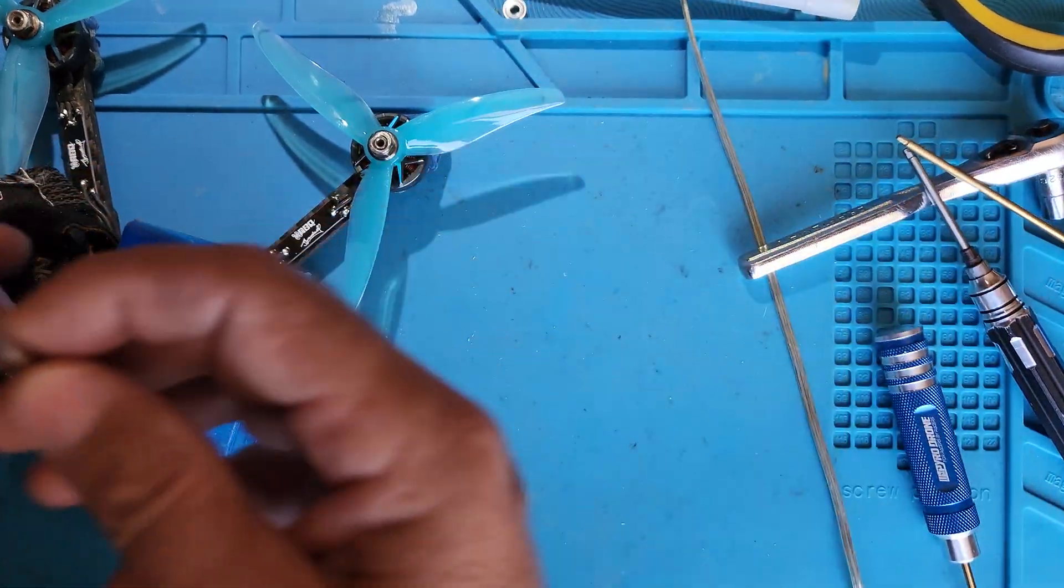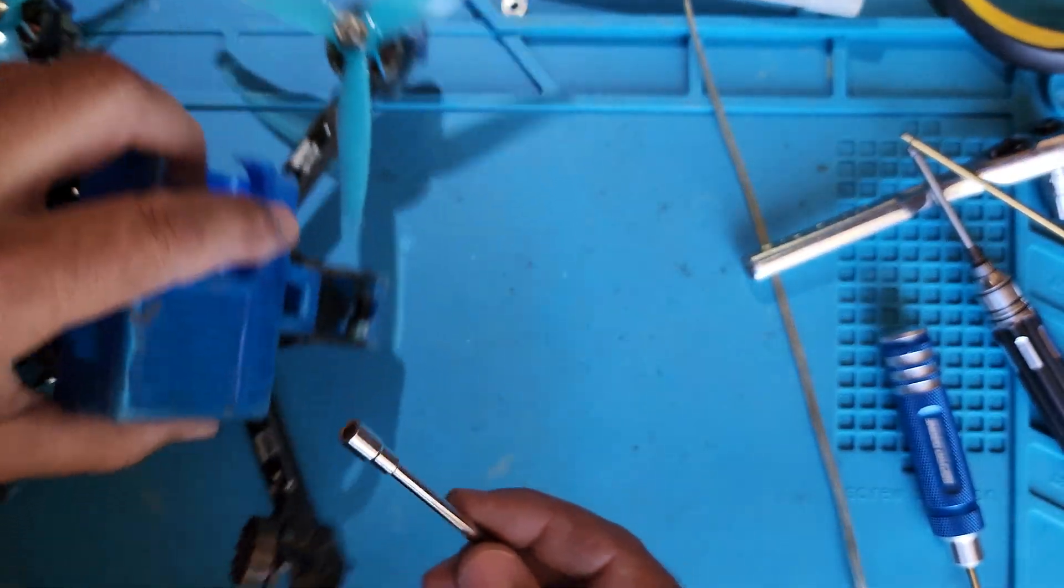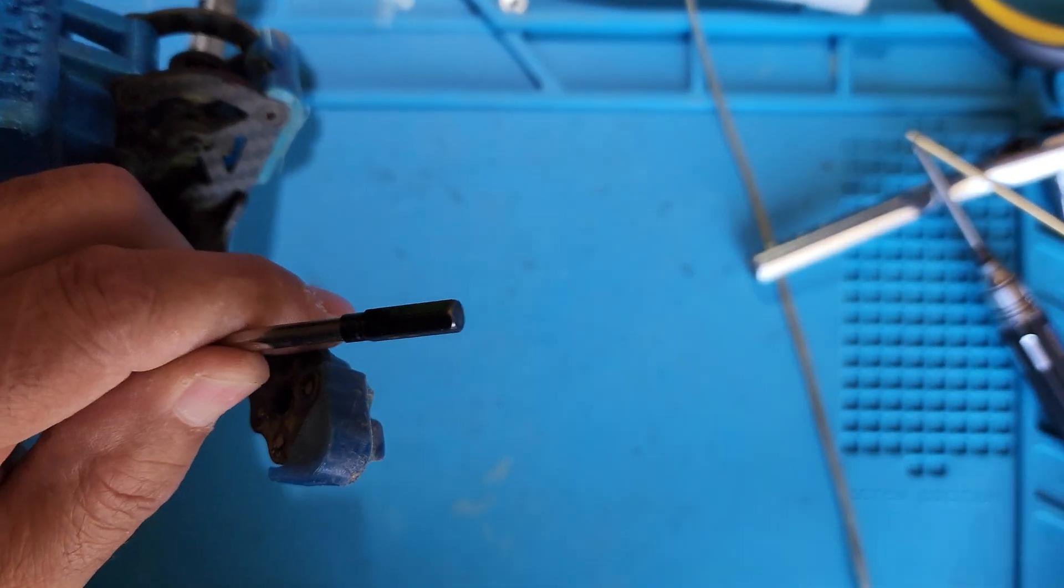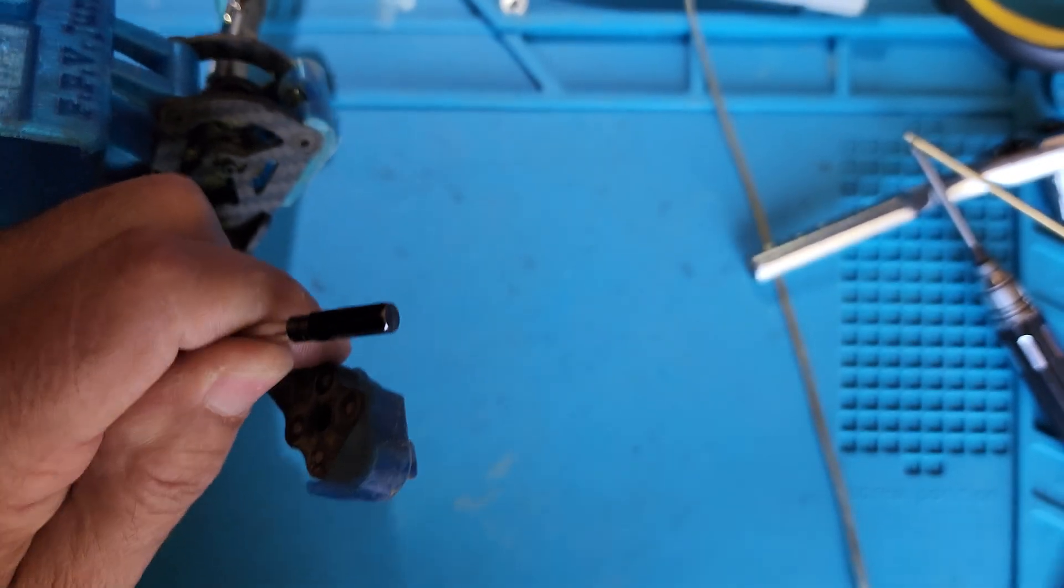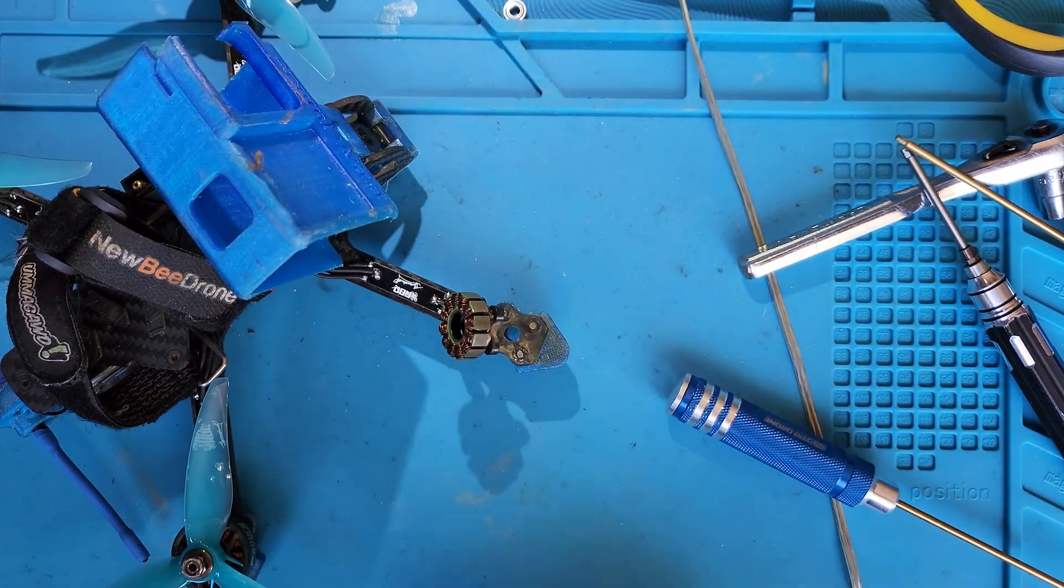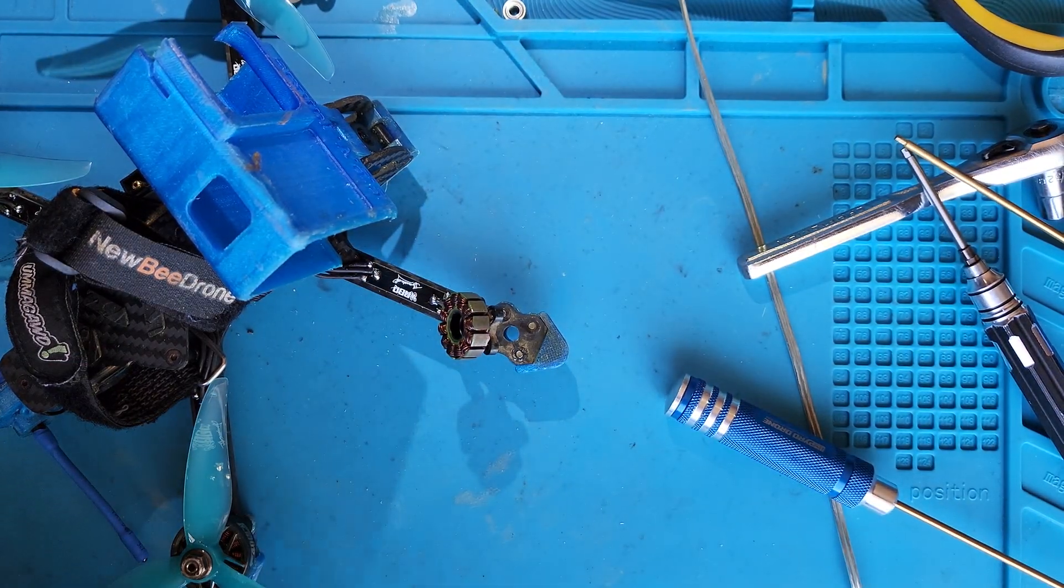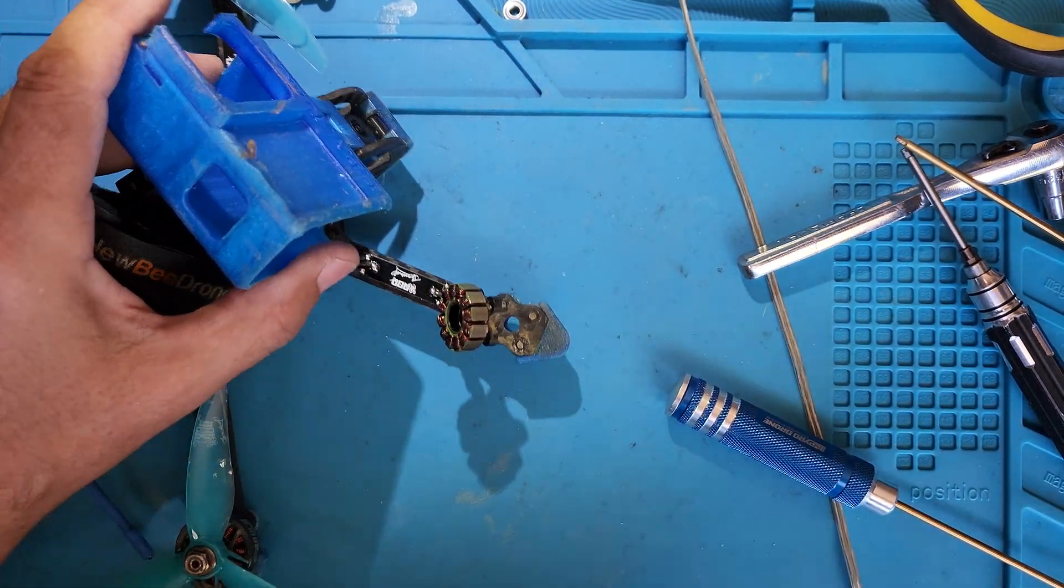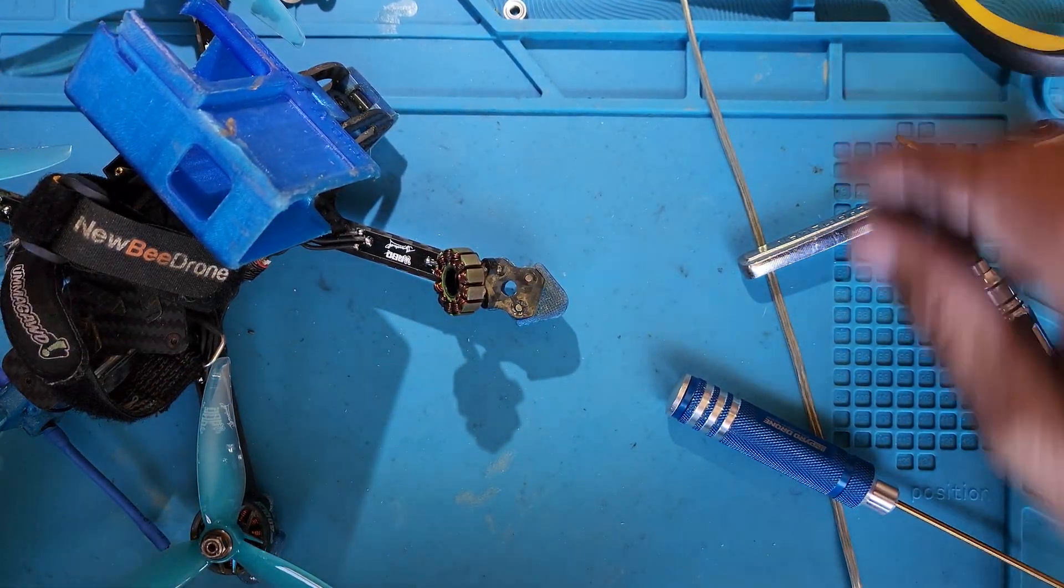Then what I do is I take this guy right here and I put it in for the opposite side. I put it right in there and I basically repeat the process. And the bearing shot out. It fell on the floor, and it fell on the floor of course. That's the hard part. Basically, but you're halfway done.